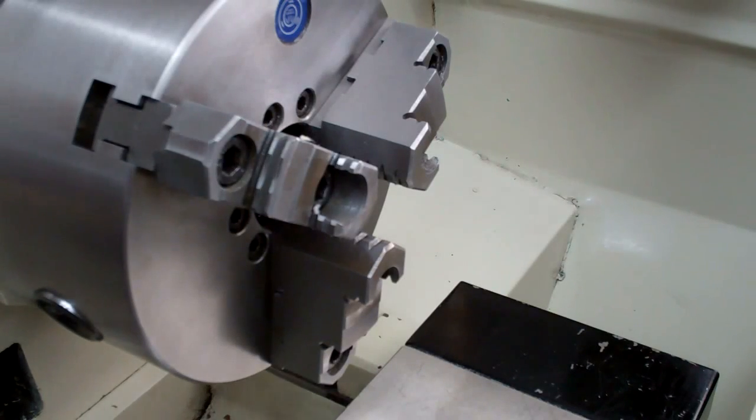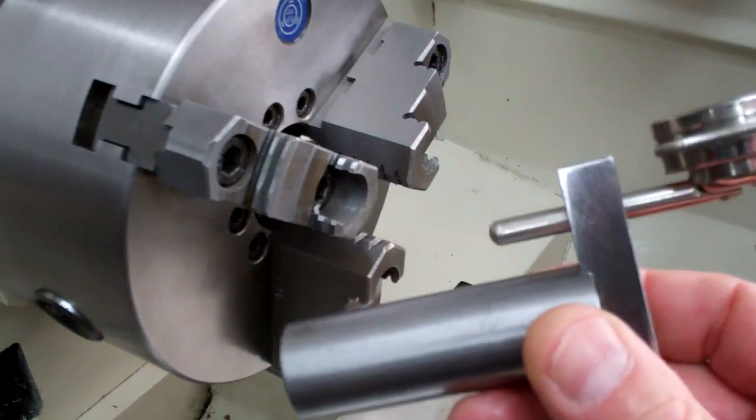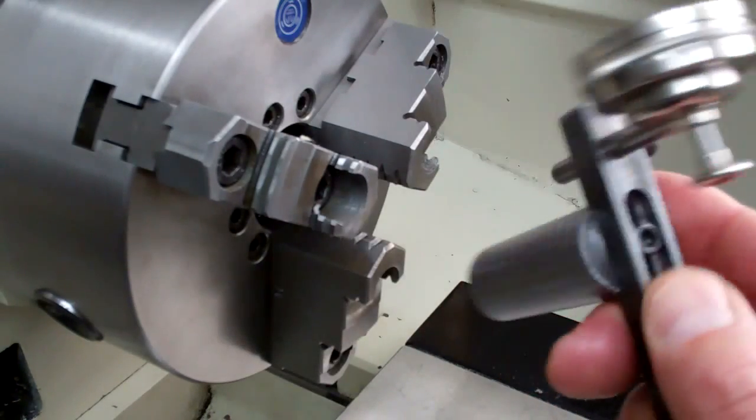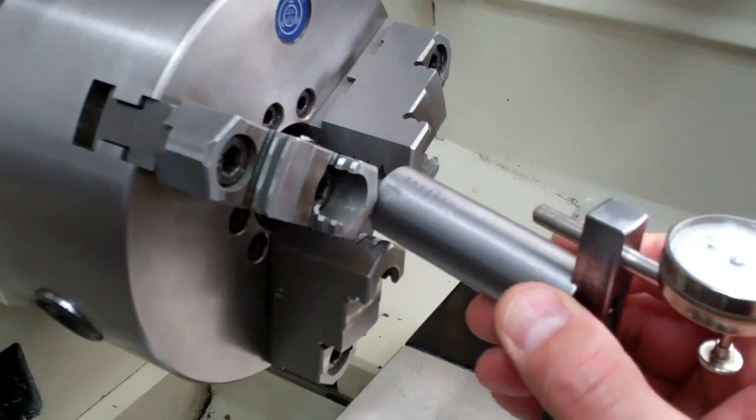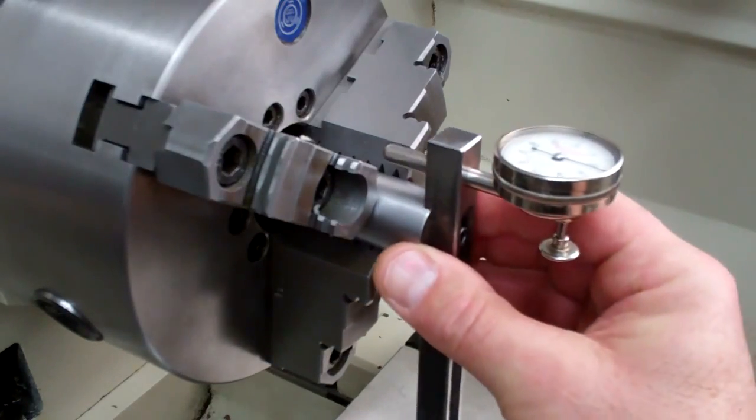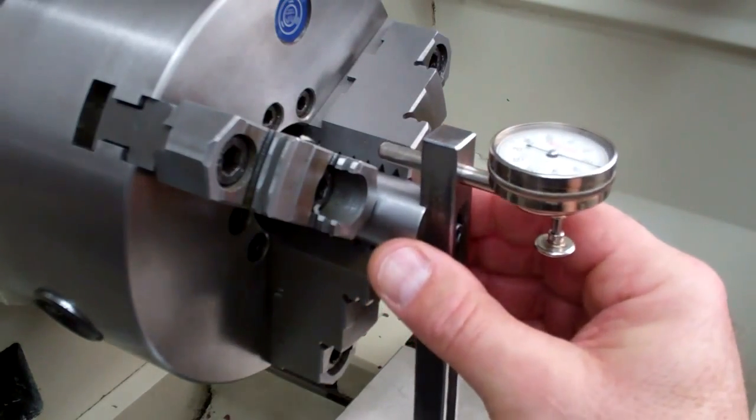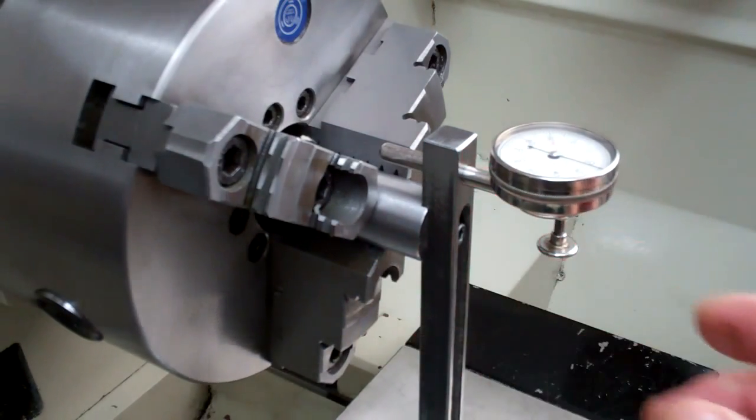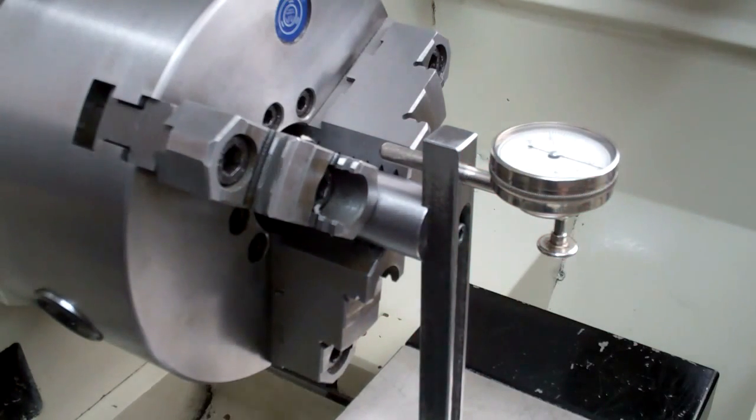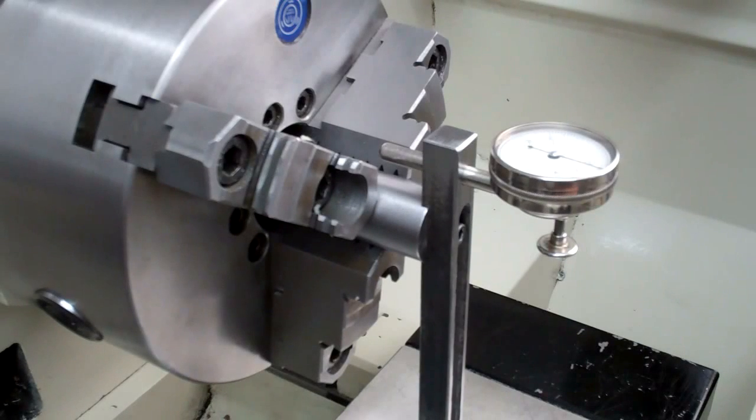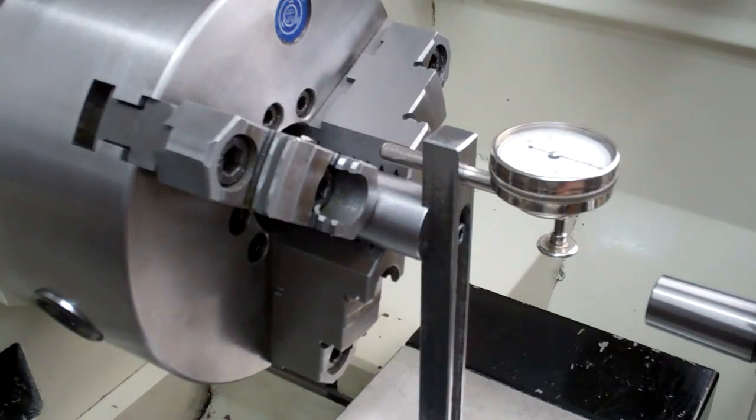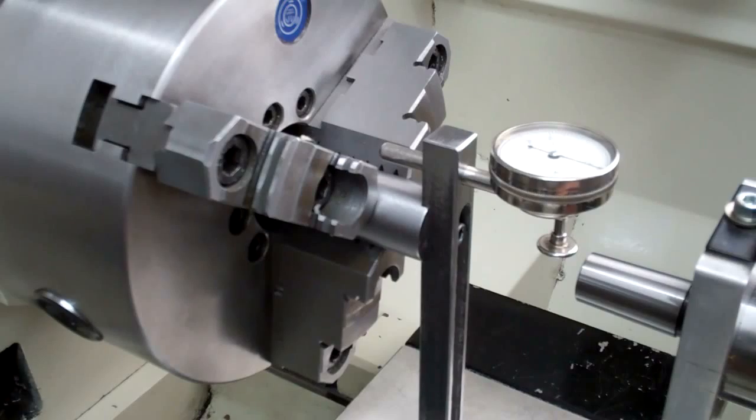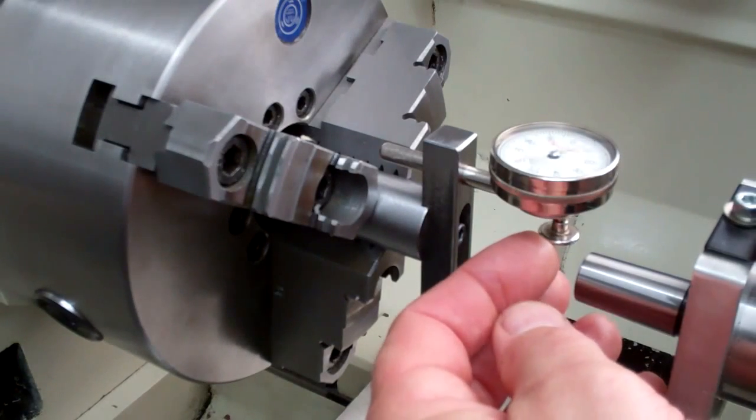Okay, we're back over at the lathe now. And basically all you do is you take your little homemade tool, chuck it up. And bring your tailstock in without crashing your indicator of course. Lock it down, bring her in.